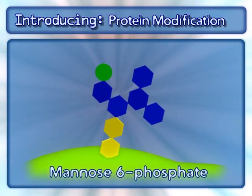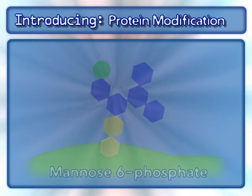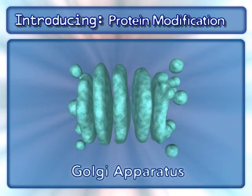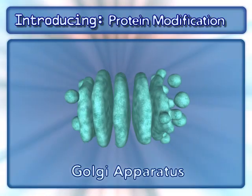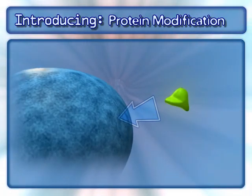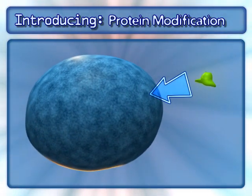One example of this is mannose-6-phosphate. These sugar side-chain modifications occur within the Golgi apparatus. We focus here on the delivery of a hydrolase enzyme to the endosome.